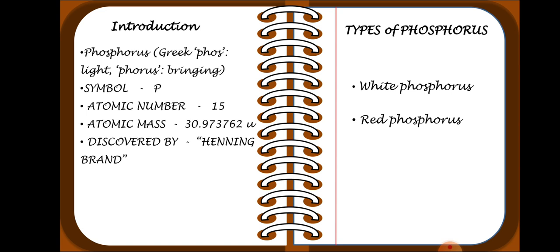Introduction. Phosphorus is made up of two Greek words: 'phosphos' meaning light and 'phorus' meaning bringing — so it is a non-metal which glows or burns in light. In chemistry, it is symbolized with the letter P. Atomic number is 15, atomic mass is 30.973762 units, and it was discovered by Henning Brand.